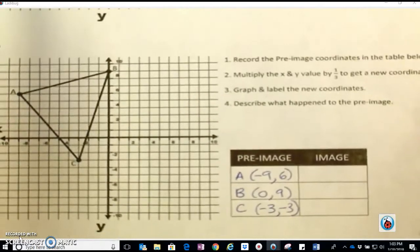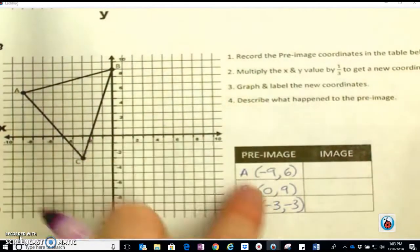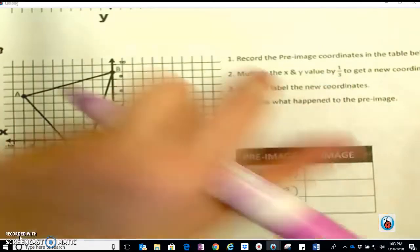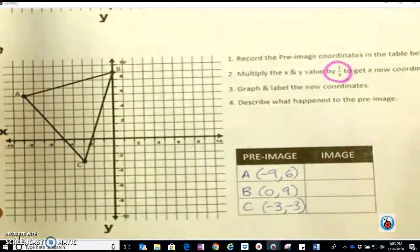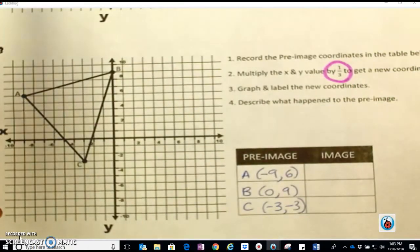Then here in this one, we've already recorded the points, and it said this time to multiply the value by 1/3 to get the new one.